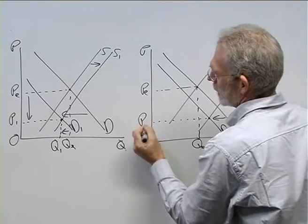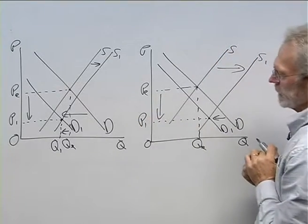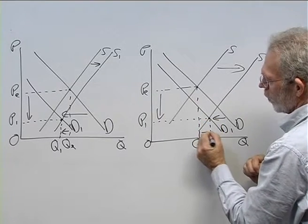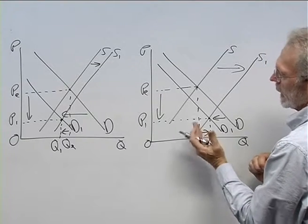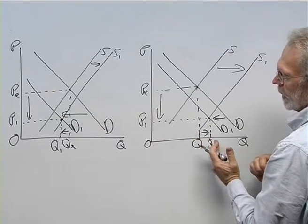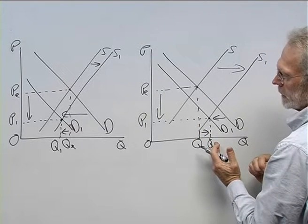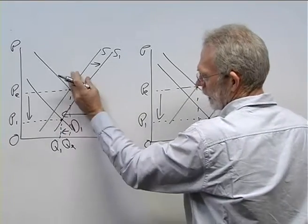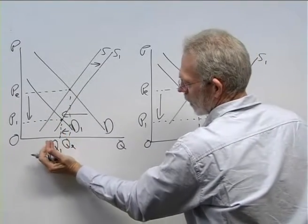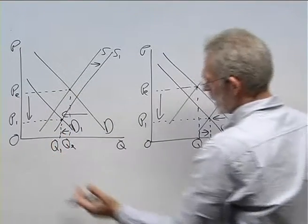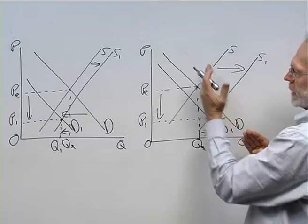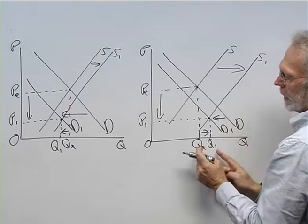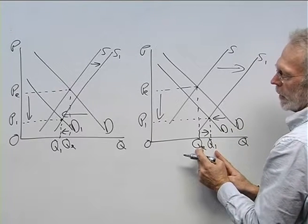And we see the price level decreases. But now we find equilibrium quantity increases from QE to Q1. In other words, when the decrease in demand is bigger than the increase in supply, equilibrium quantity will decrease. When the opposite is true — the increase in supply is bigger than the decrease in demand — equilibrium quantity will increase.